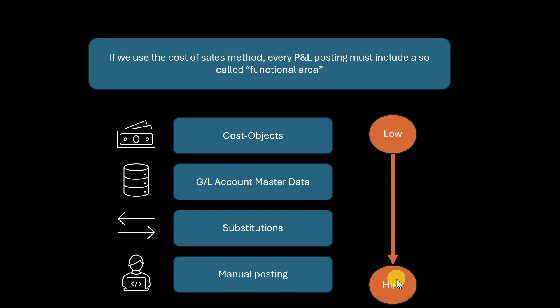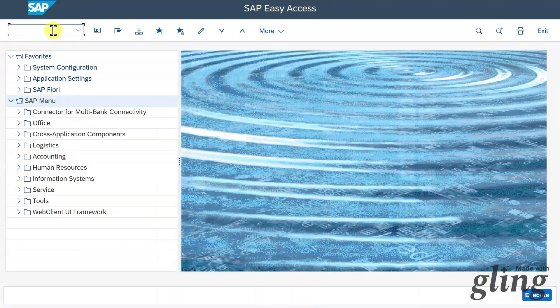For example, if we derive functional area 10 from a cost object, we can still override it in a manual posting. Let's now jump into the system to see this in action. I am here in the SAP S4 HANA system using GUI, though the concepts also apply if you use the central business configuration. We go to SPRO, hit enter, go to the reference IMG, and into financial accounting.